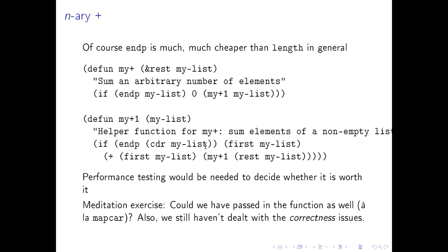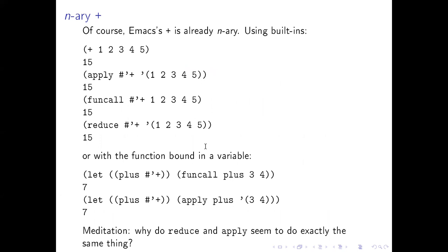It is true that I haven't dealt with the correctness issue, but we'll get to that later. I don't really care about the order in which you add the numbers, although you should care if you're adding lots of numbers of different sizes. We will get to the stack overflow issue later. Now, this whole exercise was just to show how you build an n-ary plus out of a binary plus. Of course, you don't have to do this because Emacs plus is already n-ary — you can call plus on no arguments at all and it will cheerfully return zero.